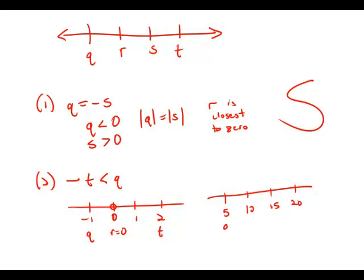If we have five, ten, fifteen, and twenty, q is five, t is twenty. So negative twenty, of course, is less than positive five. But here, r is not the closest to zero. In fact, here, q would be the closest to zero.